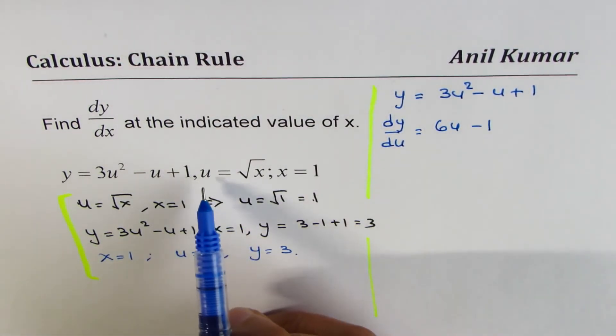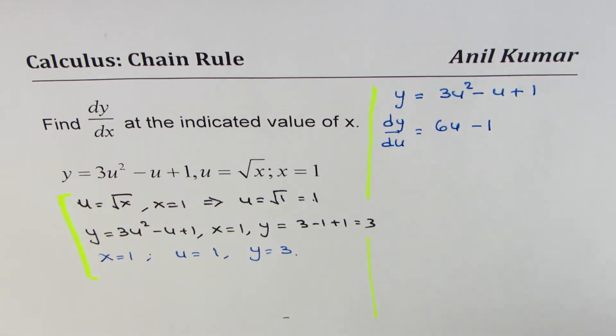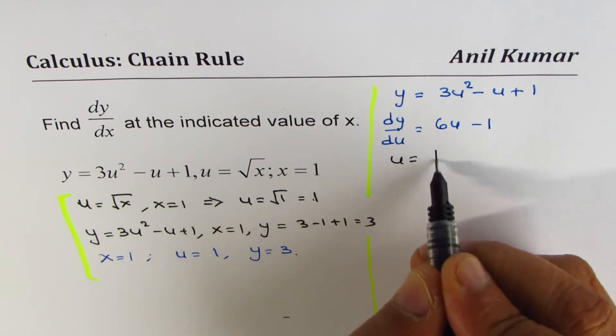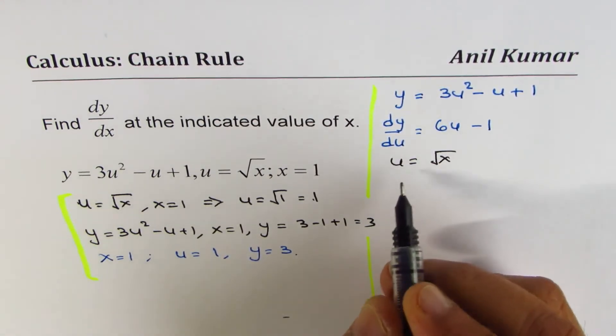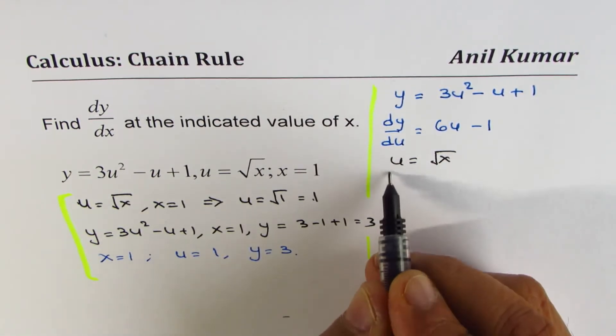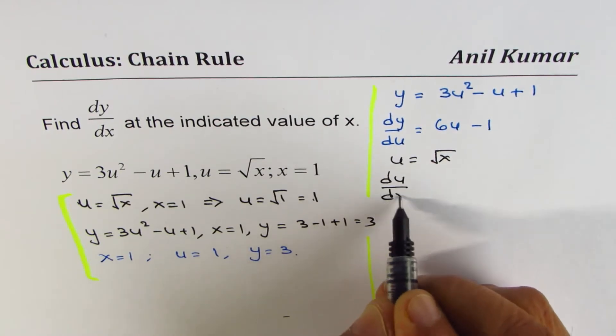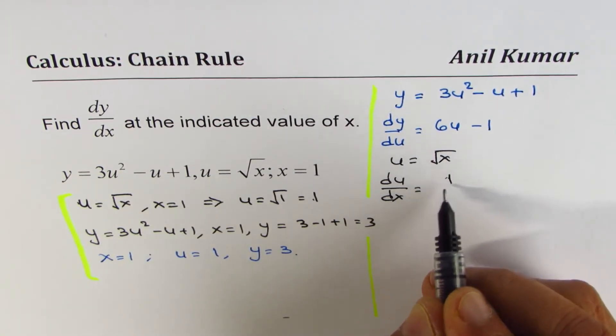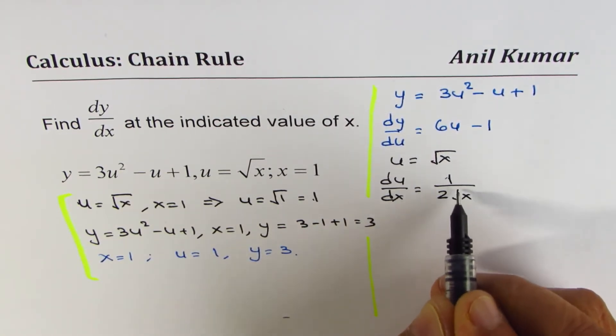Similarly, we'll differentiate the other function, which is u equals square root of x. We can differentiate this function with respect to x. We get du/dx equals 1 over 2 square root of x.